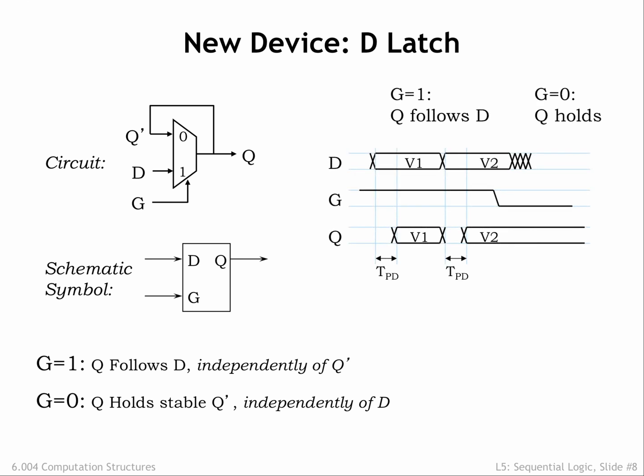This is shown in the timing diagrams on the right. The waveforms show when a signal is stable — a constant signal either low or high — and when a signal is changing, shown as one or more transitions between low and high. When G is high, we can see Q changing to a new stable output value no later than TPD after D reaches a new stable value.